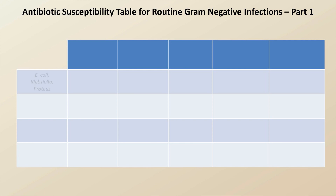For example, E. coli, Klebsiella, and Proteus typically share a similar resistance profile, as do Enterobacter, Serratia, and Citrobacter. Another important gram-negative bacteria is H. flu, as is the genus Neisseria, to which belongs the species Neisseria gonorrhea and Neisseria meningitidis.